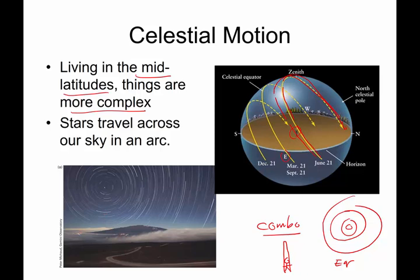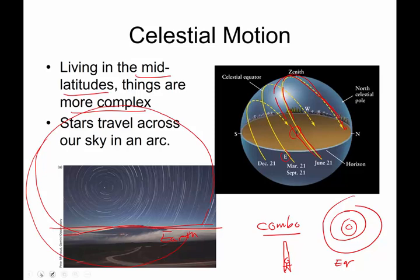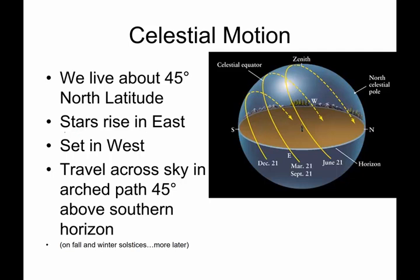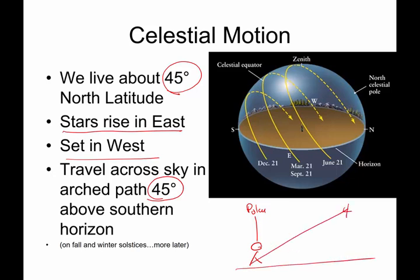Now, there is still the entire circular motion, but the challenge is the Earth is going to get in the way. All of this celestial motion is still big circles, still big spheres, except we don't see the bottom of it because it's below Earth's horizon. Stars rise in the east, set in the west. Because we are at about 45 degrees latitude, this arced path is going to be about 45 degrees above the horizon. Don't look for the pole star to be directly above your head. Polaris is going to be somewhere around 45 degrees above the horizon, and that is due to our latitude on the Earth.